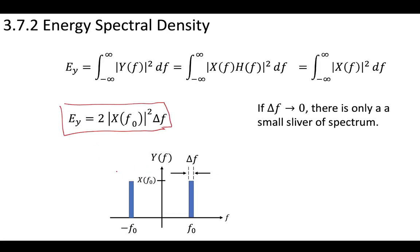We have this width delta f being multiplied by the height X(f₀) squared, and there's two of them. We've determined that this can be the total amount of energy at the output because so much of our output is just equal to zero.